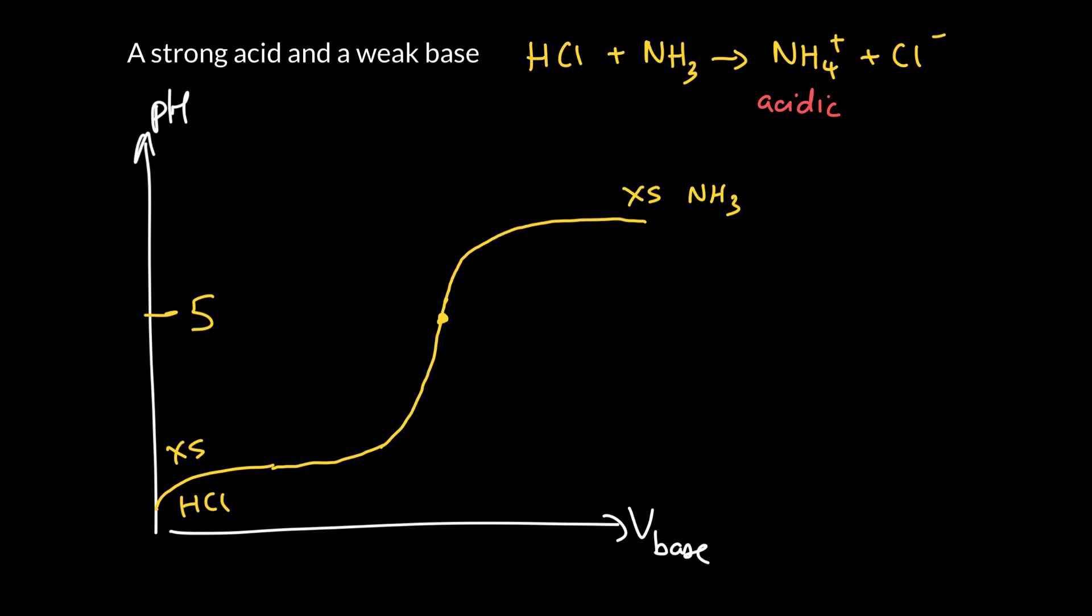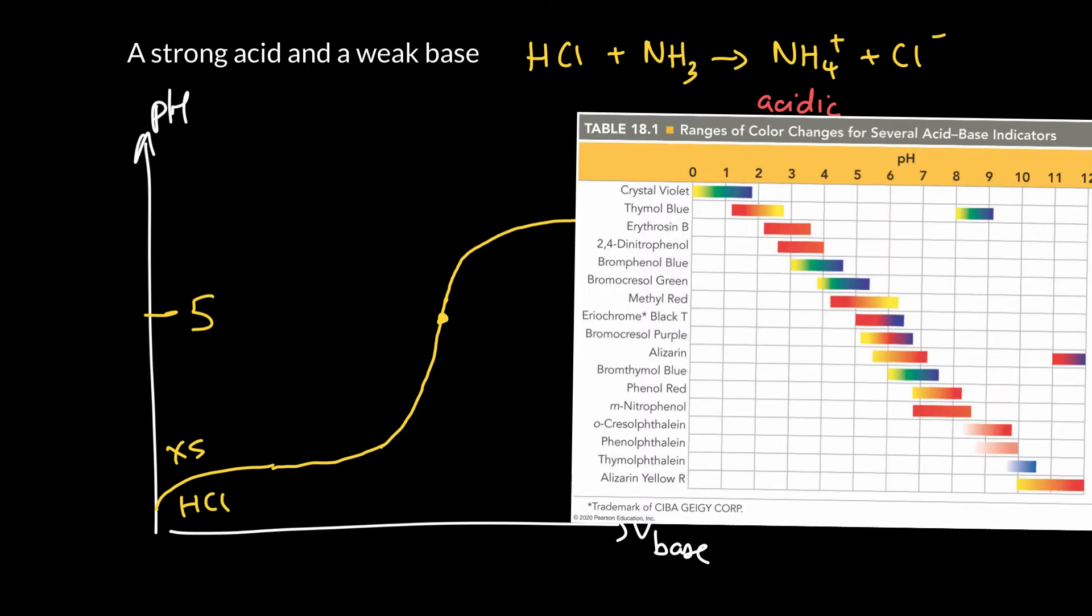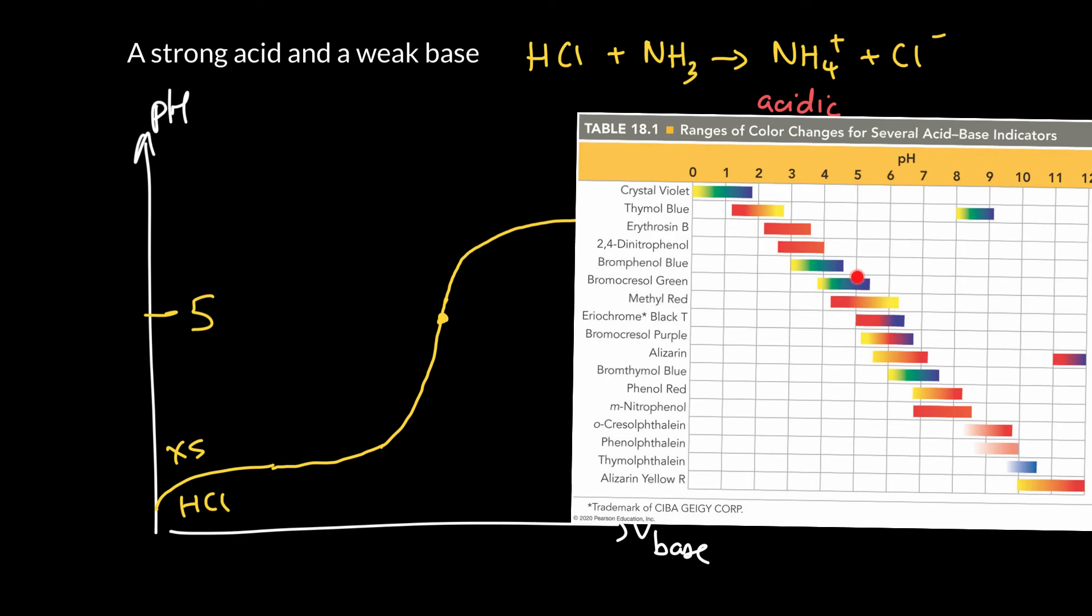This is a chart from our book. We're going to look at a pH of about five and methyl red looks pretty good. Below about five it's pretty red. Above about five it's pretty yellow. So it kind of crisscrosses here from four to six. So that would be a pretty perfect indicator.